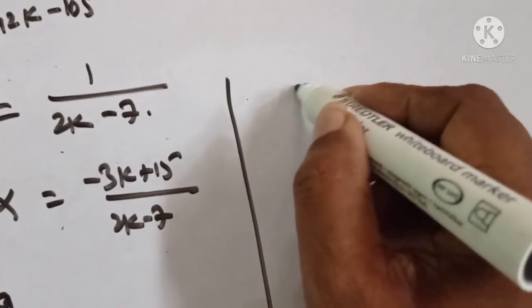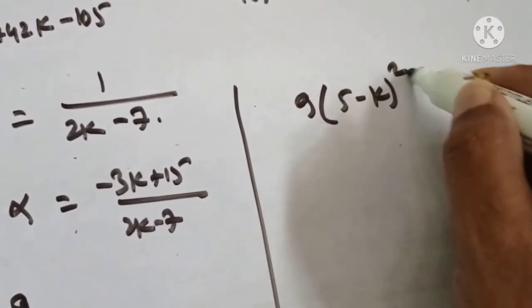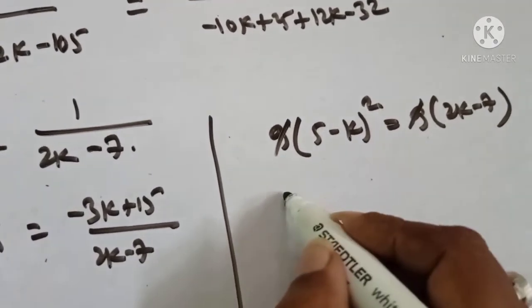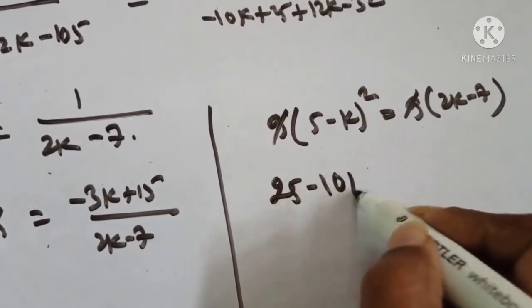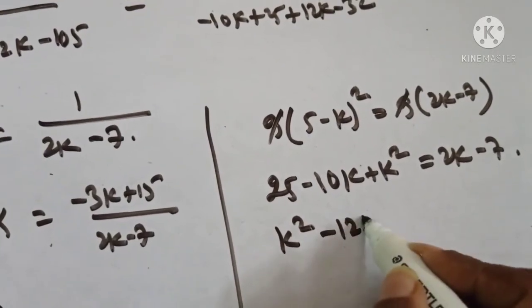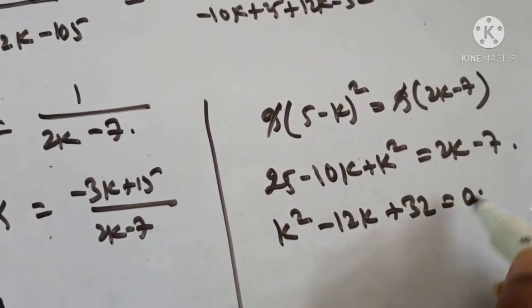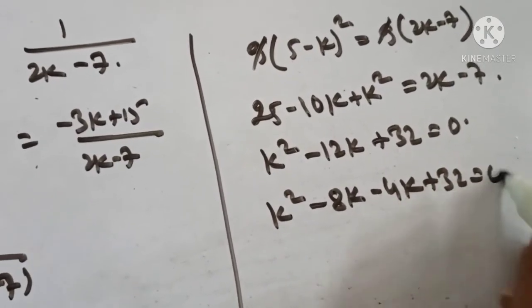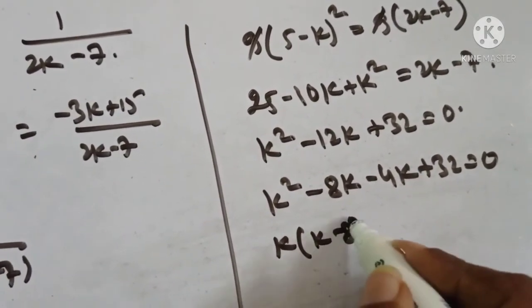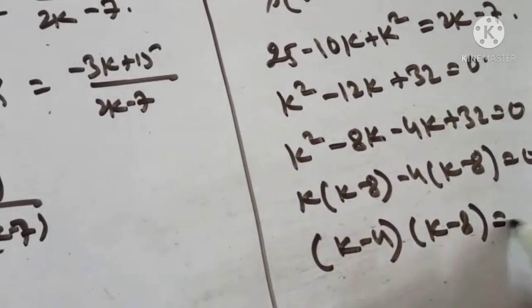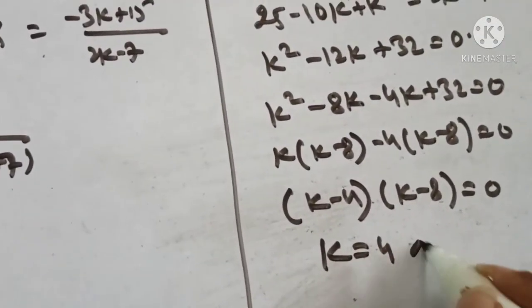Taking 3 common: 9 times (5 minus k) squared equals 9 times (2k minus 7). The 9s cancel. Expanding: 25 minus 10k plus k squared equals 2k minus 7. So k squared minus 12k plus 32 equals 0, which factors as (k minus 8)(k minus 4) equals 0. Therefore k equals 4 or k equals 8.